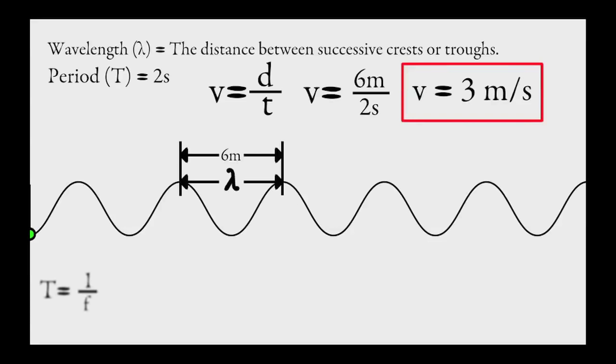So, we've seen that we can use v equals d over t to find the speed of the wave. But what if we use the period, 2 seconds, to figure out the frequency? Then, we can use our new formula v equals f lambda, put in the frequency, and add in the wavelength. And we can see that we get the same exact answer, 3 meters per second.